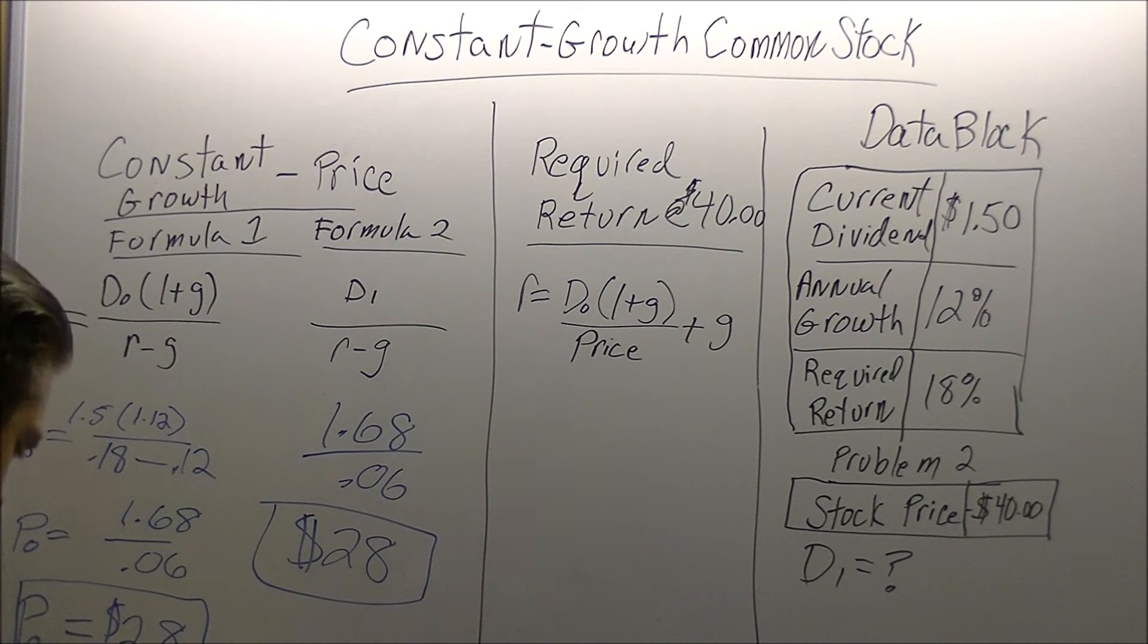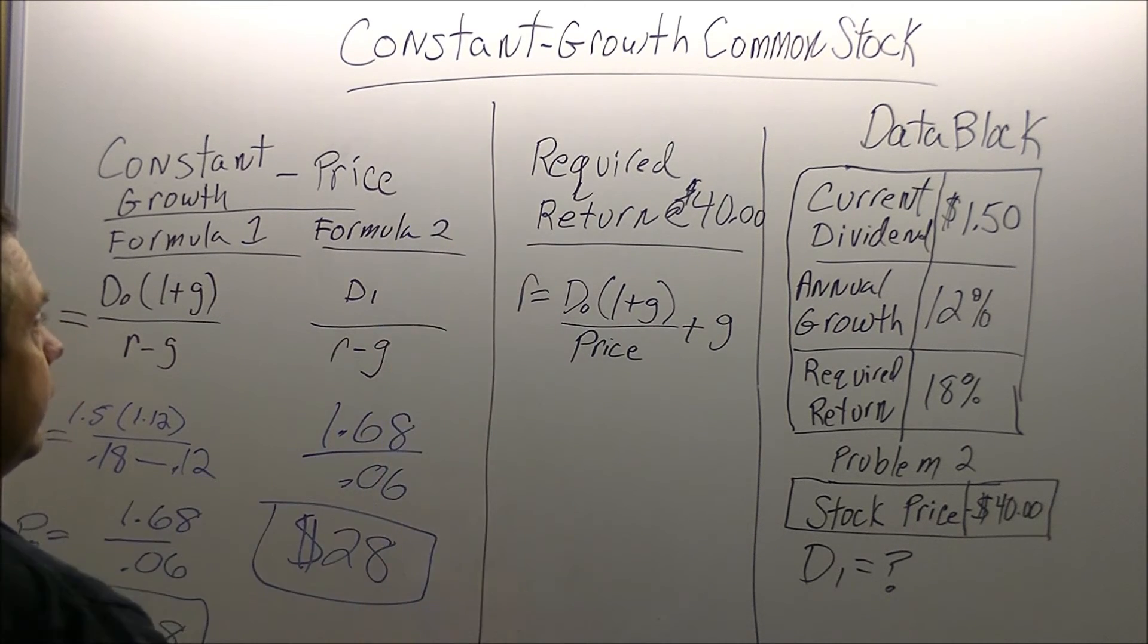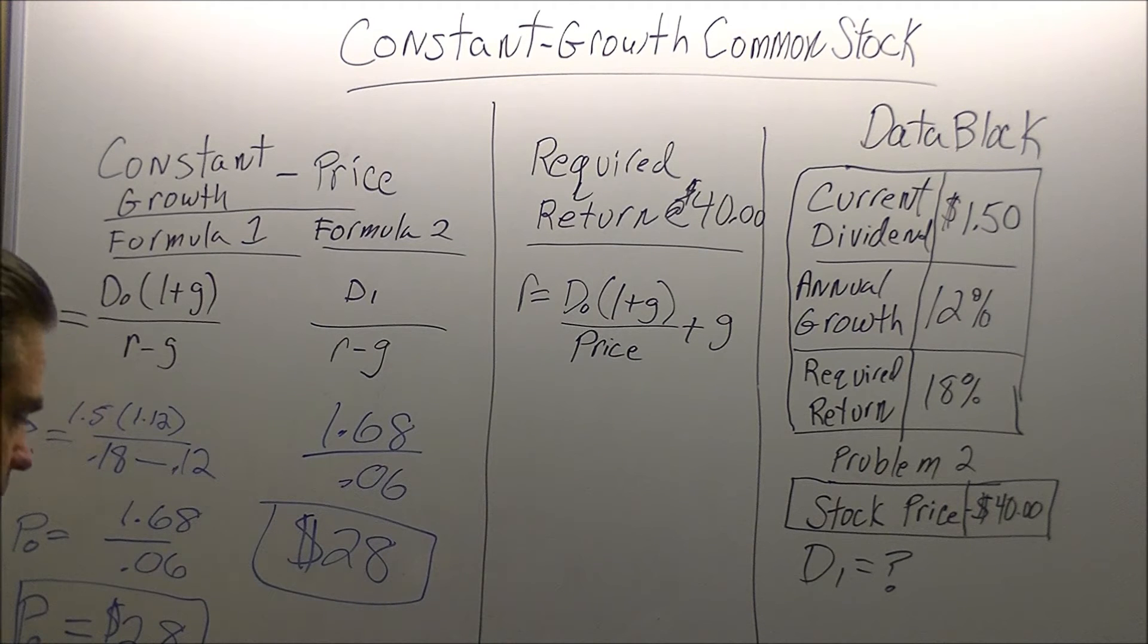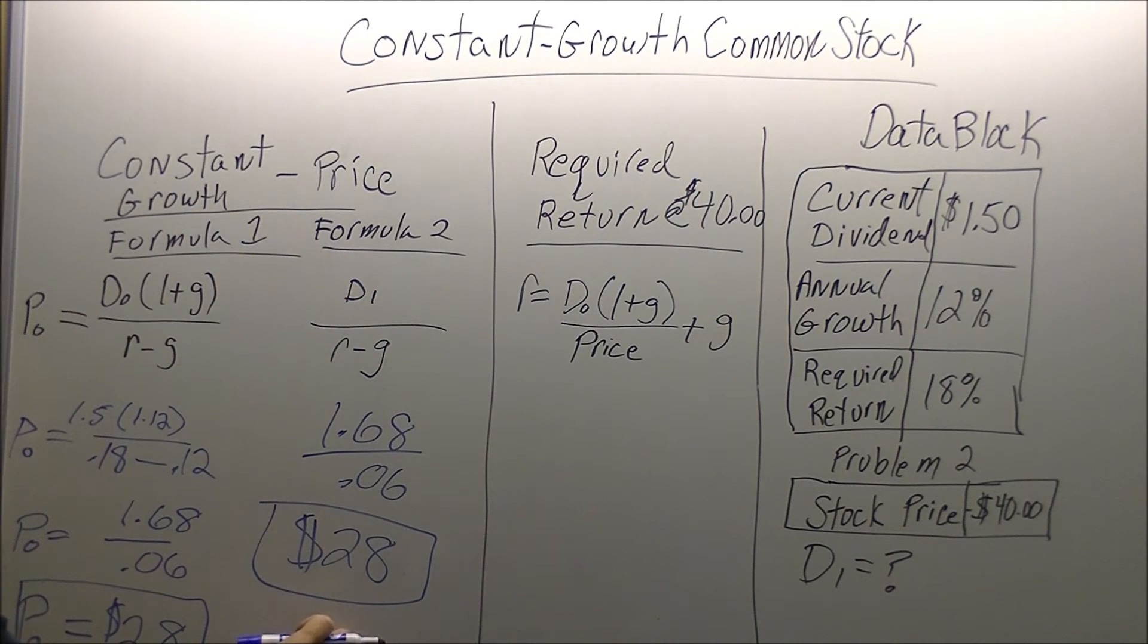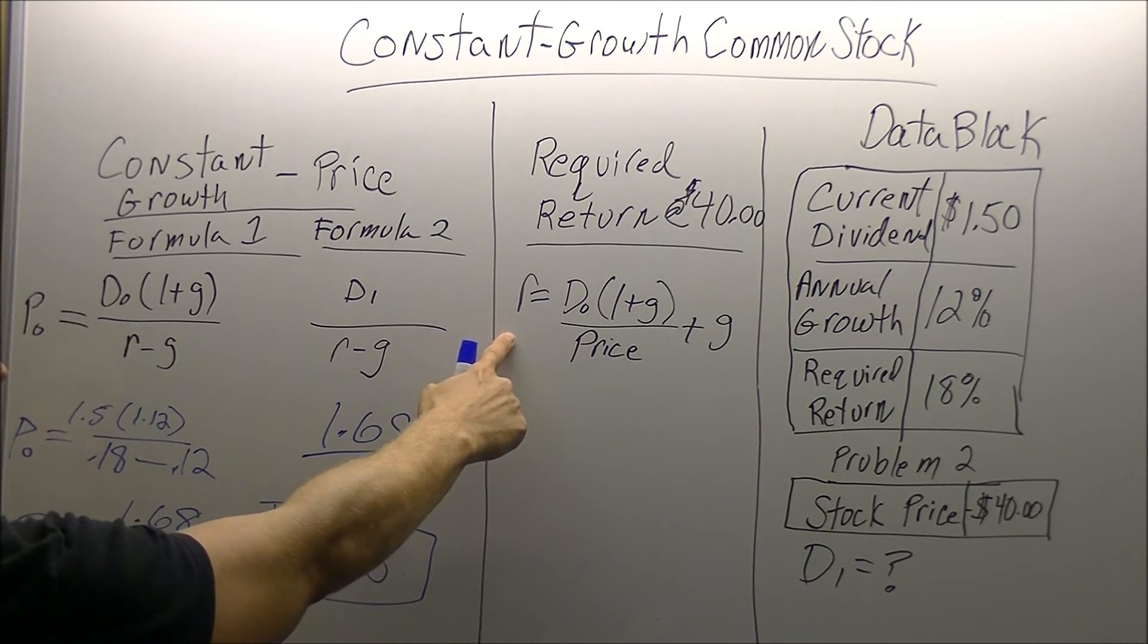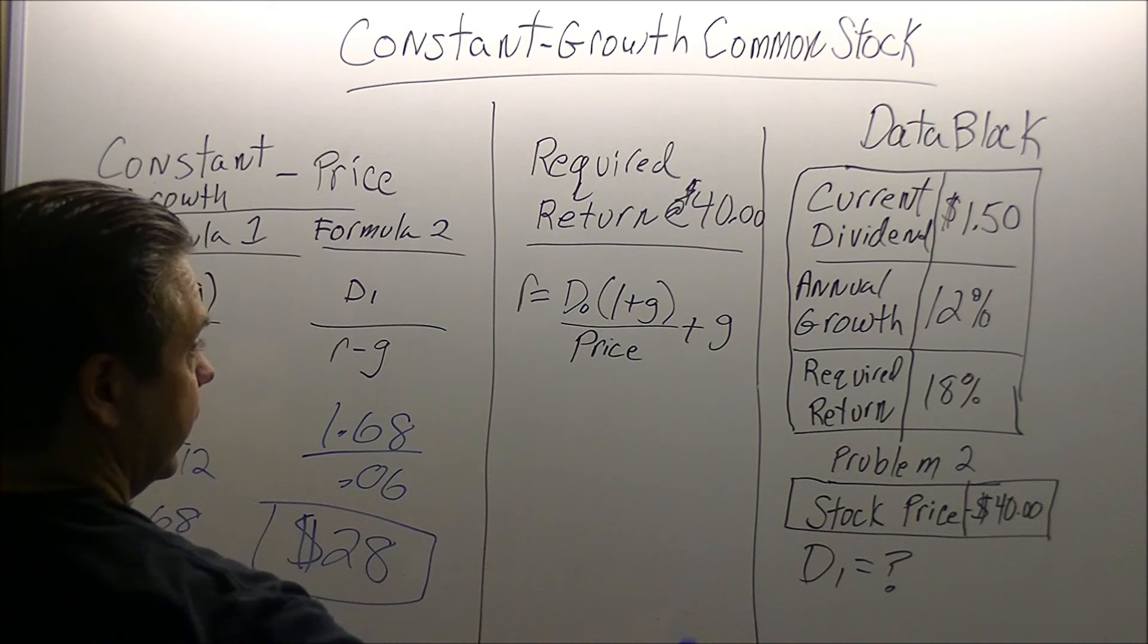Next, we're going to be looking at required rate of return. We're going to change this problem around. We're going to keep most of this information. However, for this one, what is the stock's rate of return if the market price of the stock is $40? We solved this equation and came up with $28.